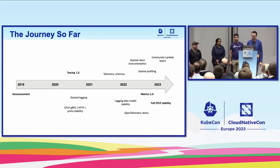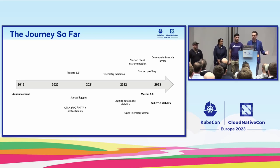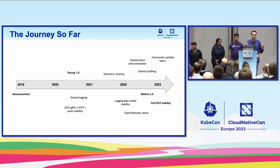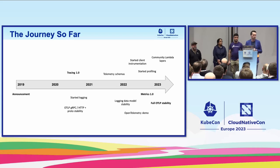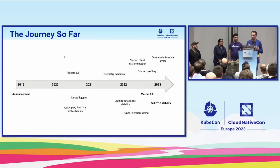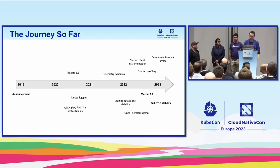There are also other things to talk about, including the OpenTelemetry demo — a demo environment you can use to test out and experiment with OpenTelemetry. It contains about 20 different applications written in different languages. You can use the demo to look at our language instrumentation, the collector, and use it as a sandbox to understand best practices for OpenTelemetry. It just hit version 1.4 in the last week, which is exciting.